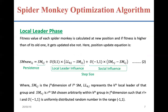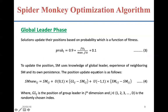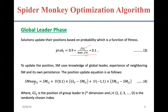After the local leader phase comes the global leader phase. In this phase, the solution is updated using a specific equation subject to a probability. Unlike the local leader phase which used probability PR, here the probability is 0.9 multiplied by the current fitness divided by the maximum fitness, plus 0.1. Using this probability, the solution is updated based on the corresponding equation.